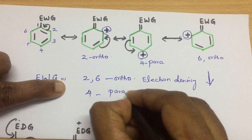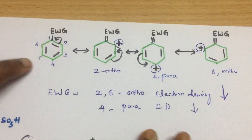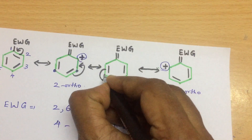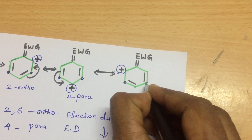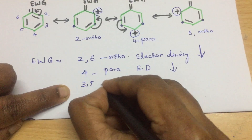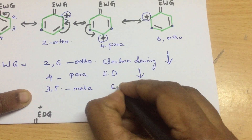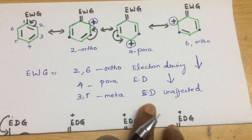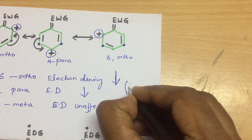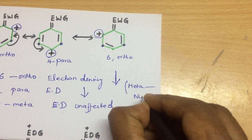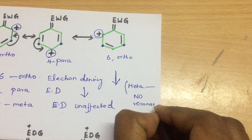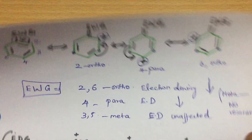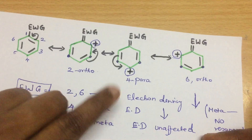What about the meta position? Positions three and five are the meta positions. In all the resonance structures there are no charges at the meta position, so the electron density at the meta position is unaffected — it remains the same. In other words, at the meta position, no resonance takes place. This is an important point to keep in mind.